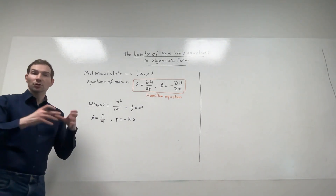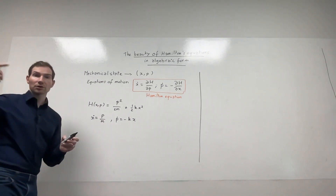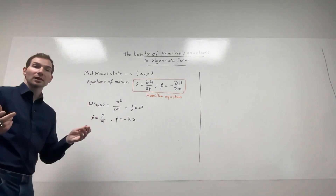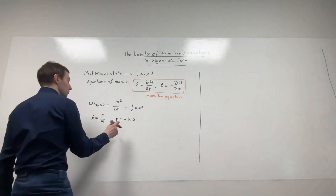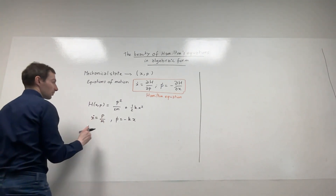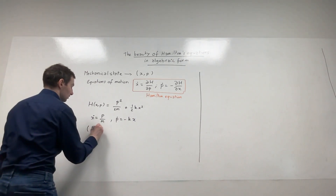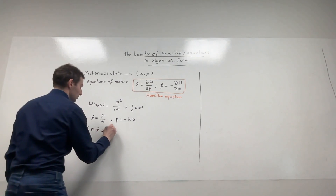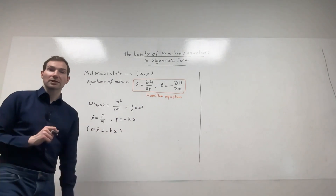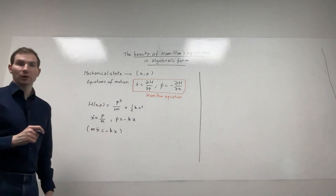If you're more used to Newtonian mechanics, this system of two first-order equations can be transformed into a single second-order equation by substituting P as M times X-dot, giving M X-dot-dot equals minus K X — the traditional equation for a spring or a pendulum at small angle approximation.